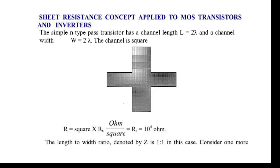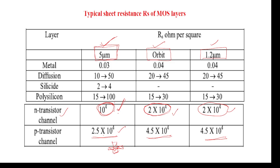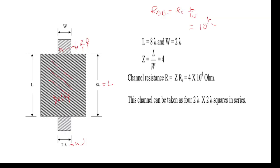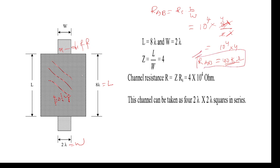The transistor internally has 10⁴ ohms resistance while fabricated. So the internal resistance equals 10⁴ ohms multiplied by length divided by width. Here lambda (λ) is a parameter in micrometers. The length is 8λ and the width is 2λ, so L/W = 8/2 = 4. Therefore: RAB = 10⁴ × 4 = 40,000 ohms = 40 kilo-ohms.